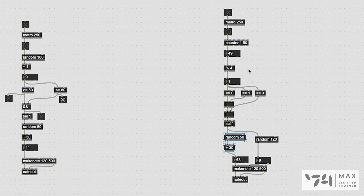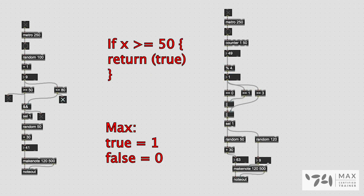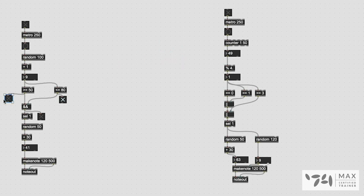Over here we have equals objects checking if an integer value is exactly zero — if so, it returns a one. We chain OR operators together to create a rhythmic sequence: if the value equals zero, or equals one, or equals three, return a one; turn that one into a bang via sel; turn that bang into random pitch and velocity values for the melodic sequencer. It's about thinking of data flow through graphical objects — it's the same as writing 'if x is greater than or equal to 50, return true or false,' just visualized as patch cords.